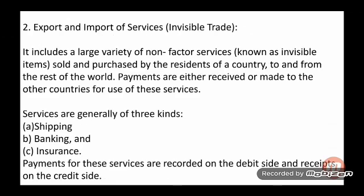The second category is export and import of services, which is called invisible trade. Services are intangible — you can't see them or touch them; they only satisfy your wants. Invisible trade includes a large variety of non-factor services known as invisible items that are sold and purchased internationally.